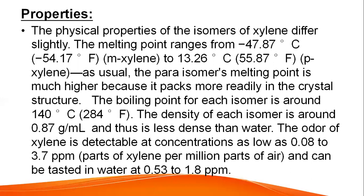Properties: the physical properties of the isomers of xylene differ slightly. The melting point ranges from minus 47.87 degrees centigrade (minus 54.17 degrees Fahrenheit) for meta xylene to 13.26 degrees centigrade (15.87 degrees Fahrenheit) for para xylene. As usual, the para isomer's melting point is much higher because it packs more readily in the crystal structure. The boiling point for each isomer is around 140 degrees centigrade. The density of each isomer is around 0.87 gram per milliliter, and thus is less dense than water. The odor of xylene is detectable at concentrations as low as 0.08 to 3.7 ppm and can be detected in water at 0.53 to 1.8 ppm.